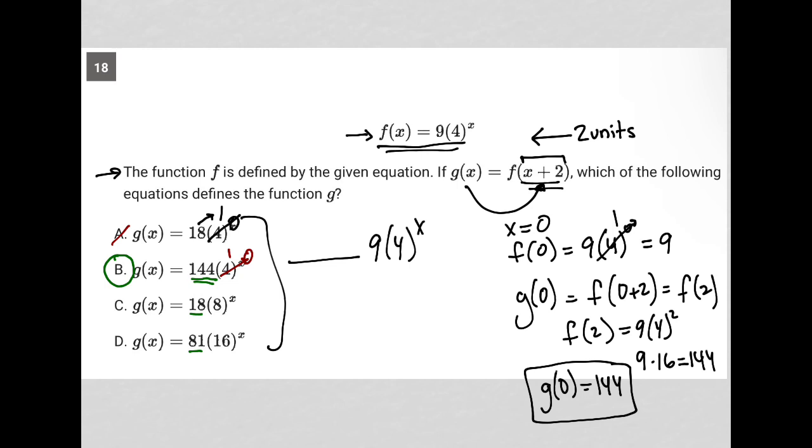I can check the rest, but it's obvious they won't give 144. The only answer choice that gives me the 144 I expect at g(0) is choice B.